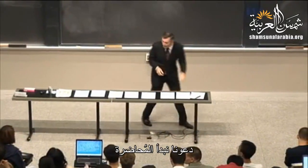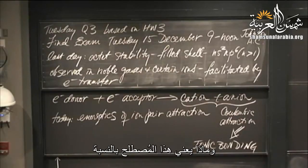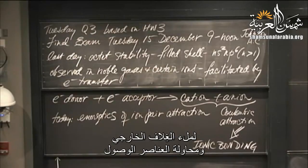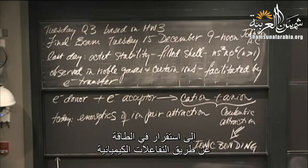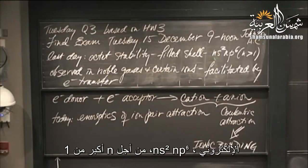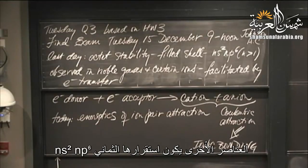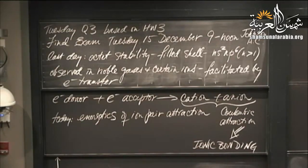All right, let's get to the lesson. Last day we started looking at octet stability — what it means in terms of shell filling and some sweet spot in energy with respect to reactivity. A filled shell leaves us with electron configuration NS2 NP6 for n greater than 1. In the case of n equals 1, there's just NS2 for helium. Otherwise NS2, NP6 — 2 plus 6 is 8. There's the octet stability.